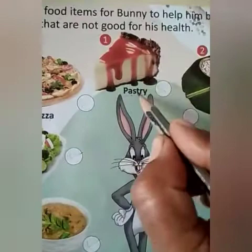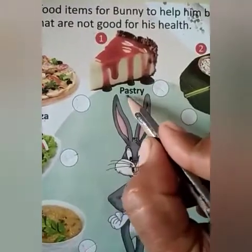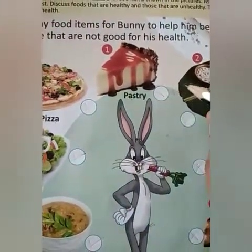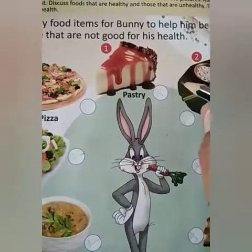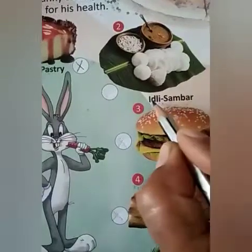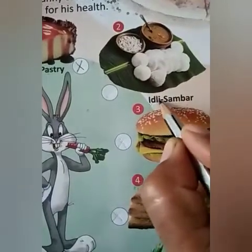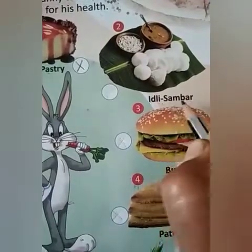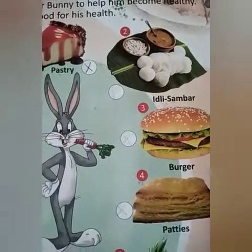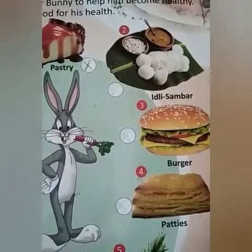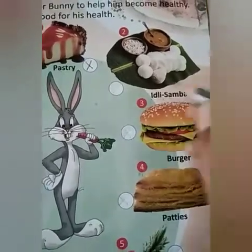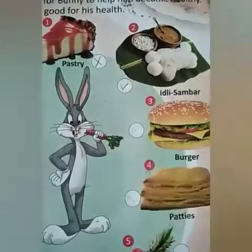Now we will start with picture number 1: P-A-S-T-R-Y, pastries. So children, is it a healthy food? No. So put a cross mark like this. Now next is I-D-L-I, idli, S-A-M-B-A-R, sambar. Idli sambar — yes, it is very tasty and it is a healthy food. So put a tick mark like this.